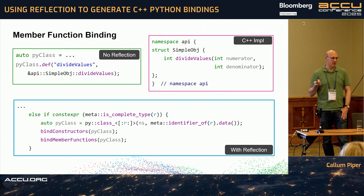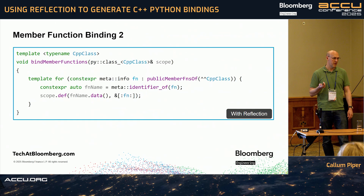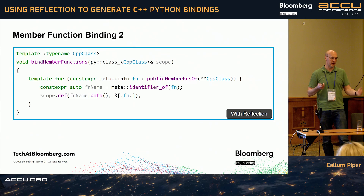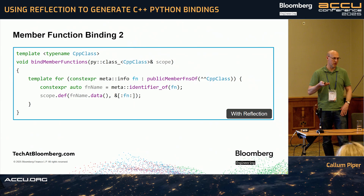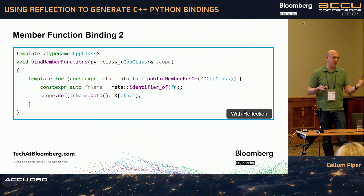Member function binding is very similar to function binding, except instead of binding the function to the namespace, you bind it to the class. You go through the members of the class — 'public_member_functions' gives you a list of functions back, and for each one you take the function name and bind it with the type.